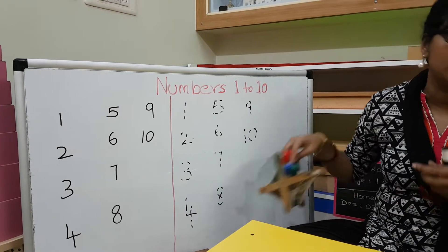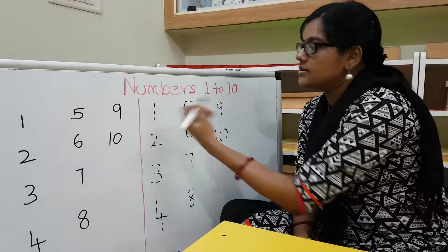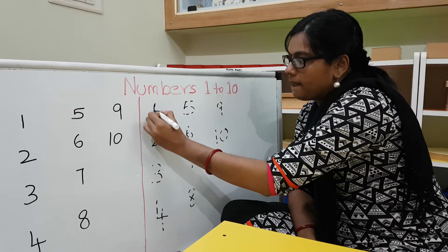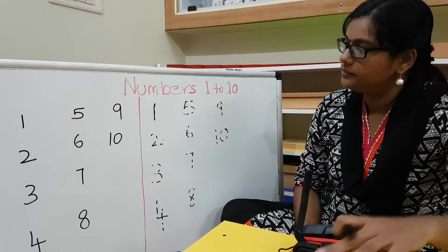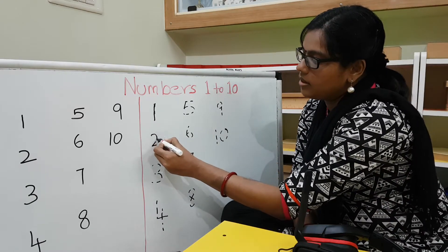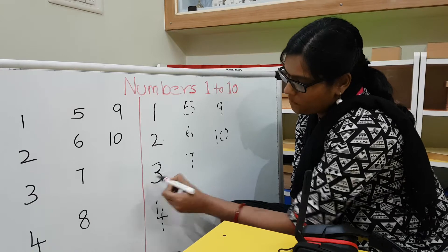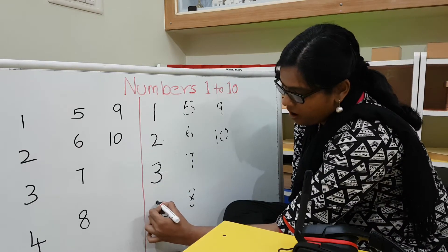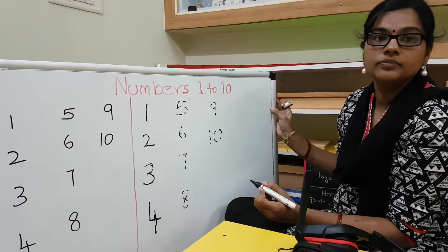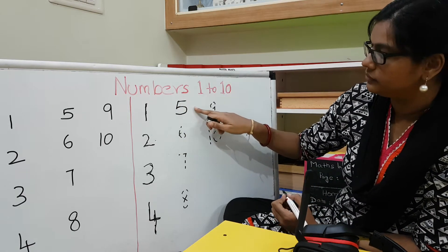Shall we trace them and revise? Trace them again. Take your pencil and start tracing along in the workbook. We'll do it on the board first. One — one standing line. Then two. Three — standing line, straight line, and another standing line.